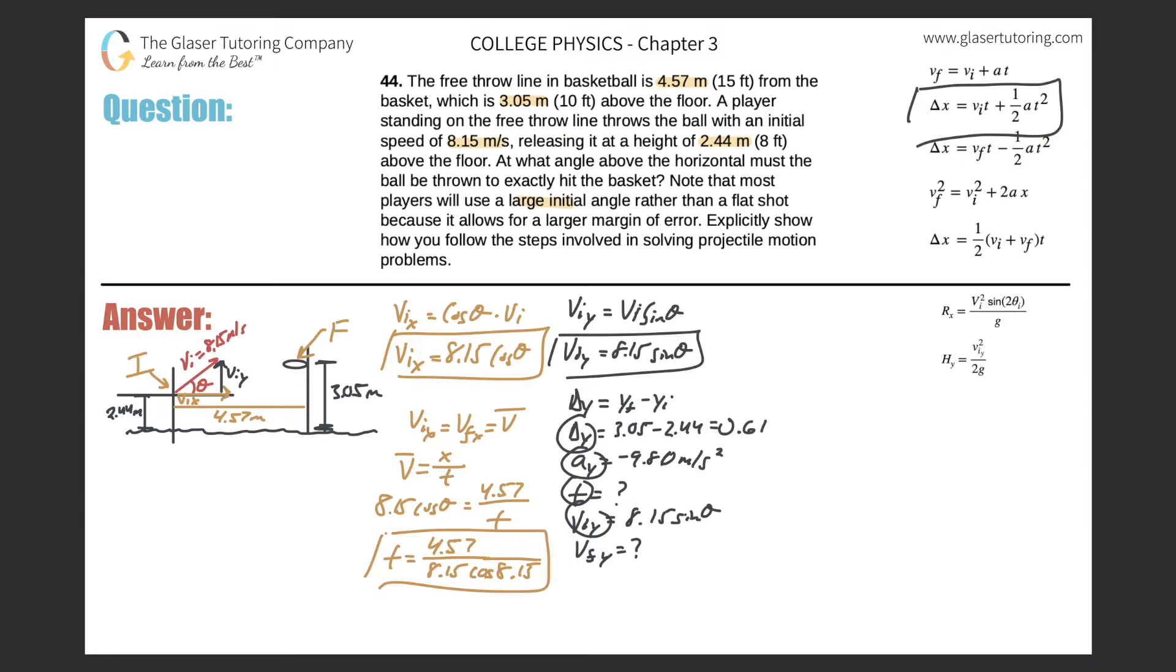I know the acceleration in the Y is going to be negative 9.80 meters per second squared because it's a freefall problem. I don't know the time. That's fine. We know the initial velocity in the Y direction, not in terms of an actual number, but we just found it before, 8.15 sine of theta. And we also don't know the final velocity in the Y. So we need a formula that relates the displacement, the acceleration, time, and then the initial velocity value. And it looks like equation number two up here fits the bill.